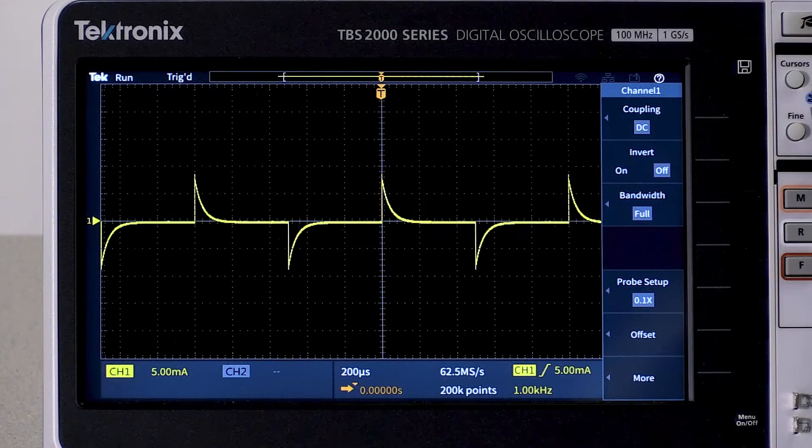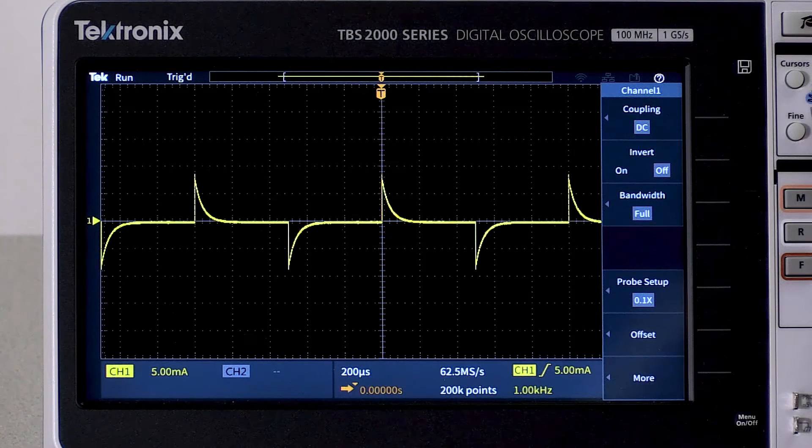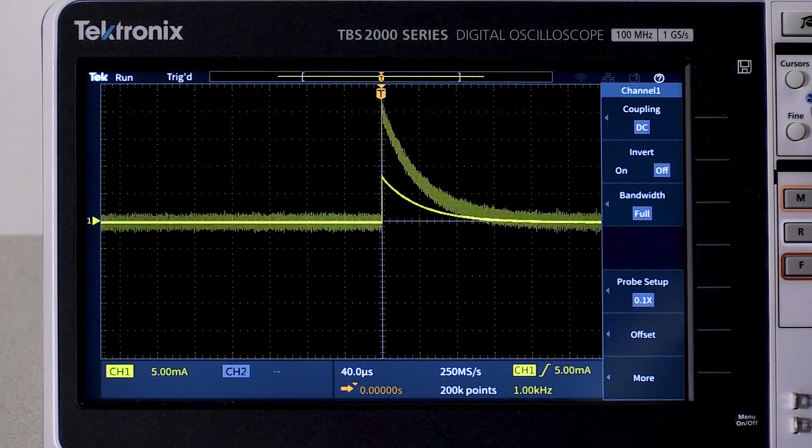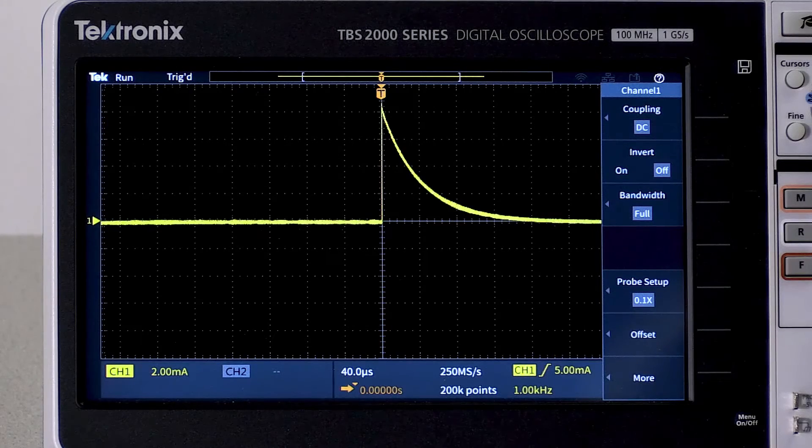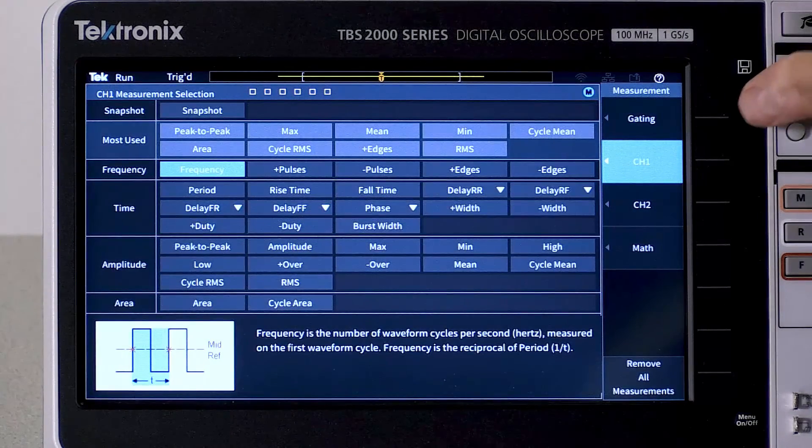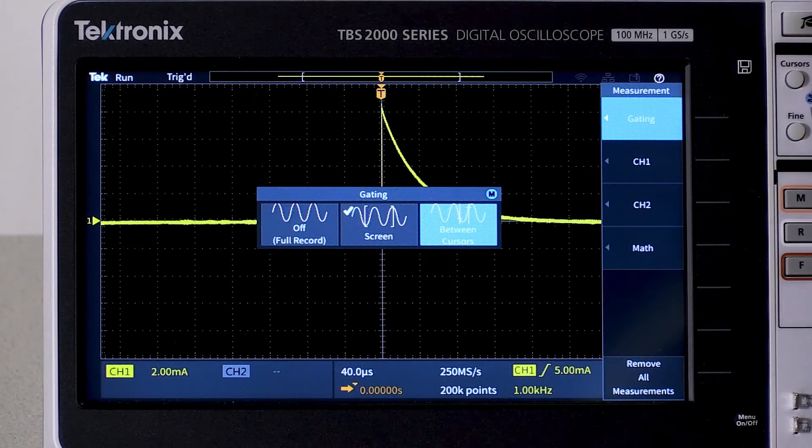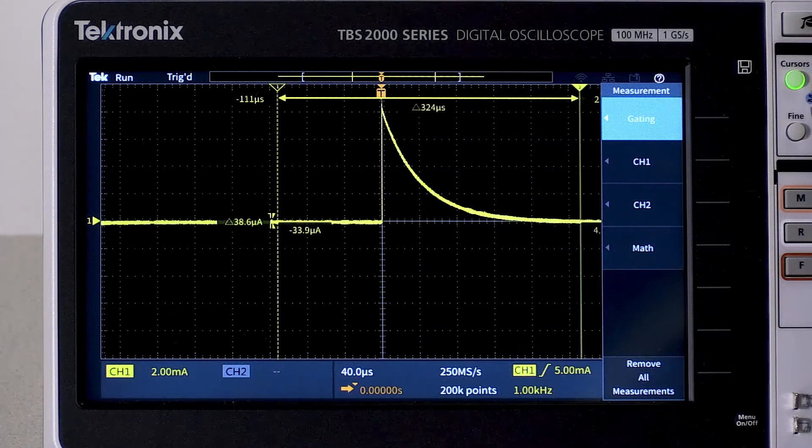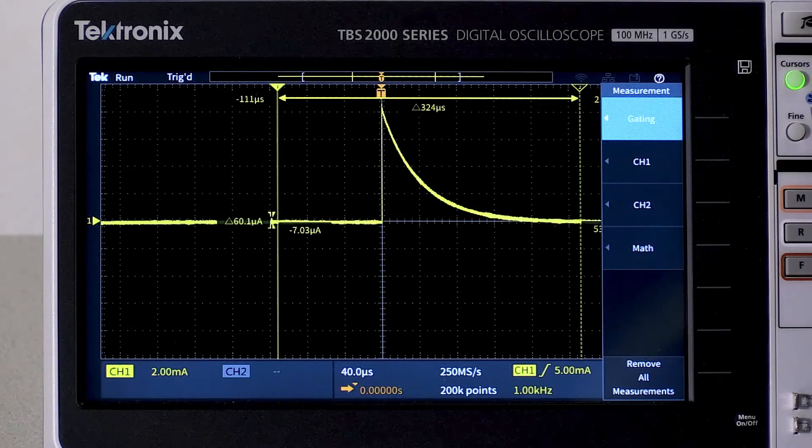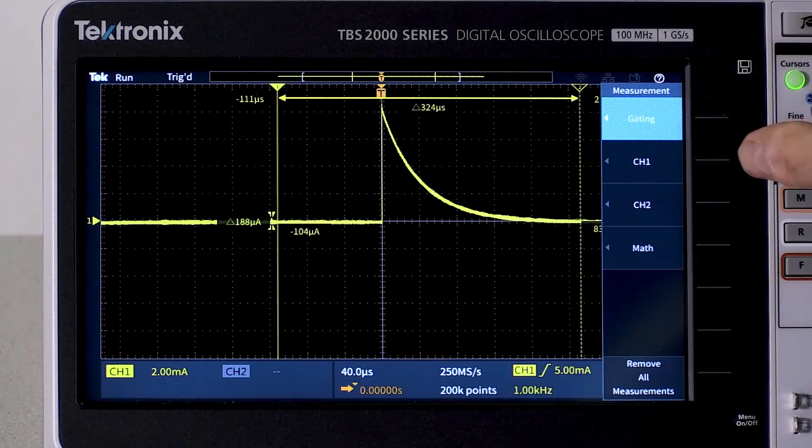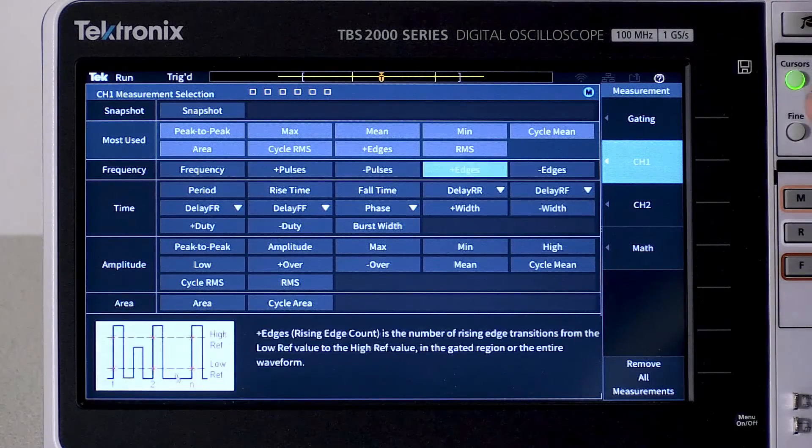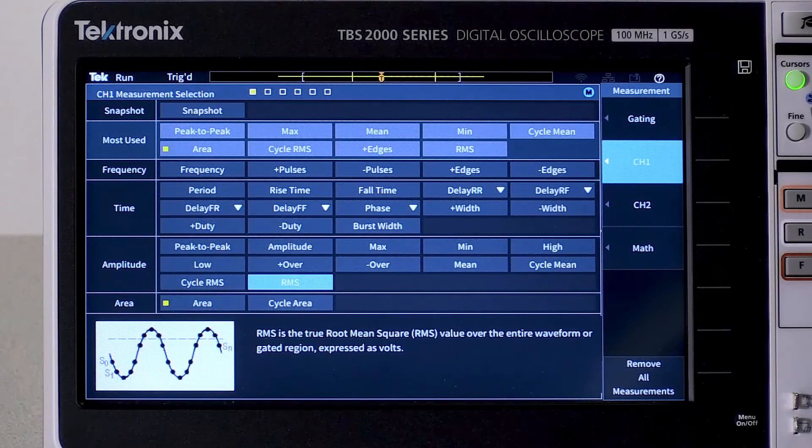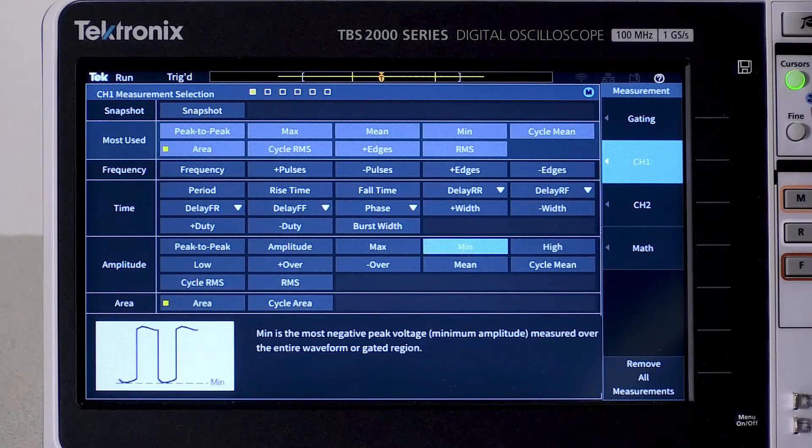Now we can use the area measurement to integrate the current and determine how much charge is stored in the capacitor. Let's focus on the charging part of the cycle. Since I want to focus specifically on the charging part of the cycle, I'm going to use cursor gating. There, now I can specify exactly the part of the waveform I want to use, and I'll go in and turn on the area measurement. I'll also turn on the max measurement, just for reference.